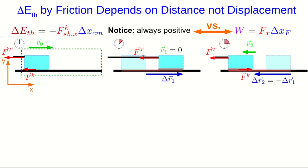It stops and because of the string pulling on it, it reverses direction and heads back the other way, at which point the friction is now pointing in the other direction. And let's compare the work done by this tension versus the change in thermal energy due to the friction that acts through this whole trip.